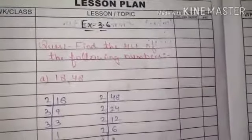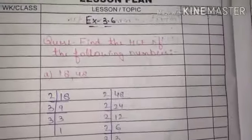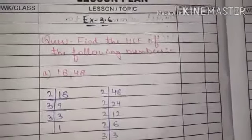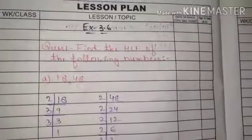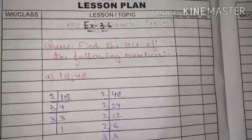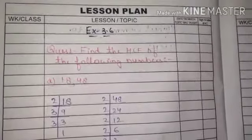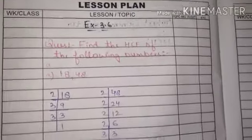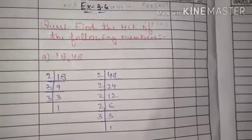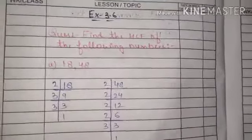Okay, now exercise 3.6, page number 63. Question number 1 is, find the HCF of the following numbers. Some numbers are given, some 2 numbers and some 3 numbers. The first part is 18 and 48.